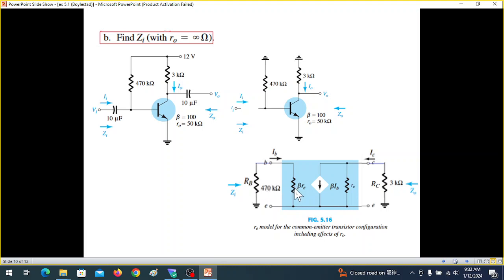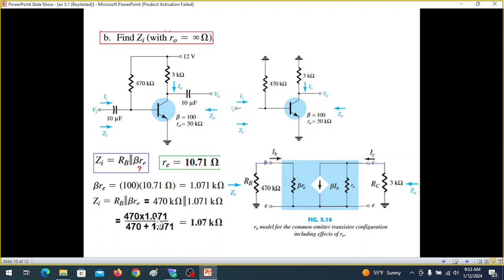So it is basically RB and beta RE in parallel. So we can say that ZI is RB parallel beta RE. Now what is the value of beta RE? We have to calculate. We had already calculated RE, we know beta to be 100. RE we had calculated this value. So beta RE will be 100 times RE. This is beta RE. And now we can find the parallel ZI is RB parallel beta RE. RB is 470 and this one is 1.071. So solving in parallel, ZI is 1.07 kilo ohm.